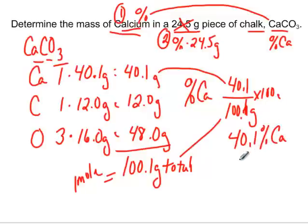Again, it doesn't matter if you have an unbelievably tiny sample or a huge sample of calcium carbonate, it's still always going to be made up of 40.1% calcium. Now let's take that into consideration, and let's use this bit of information now.